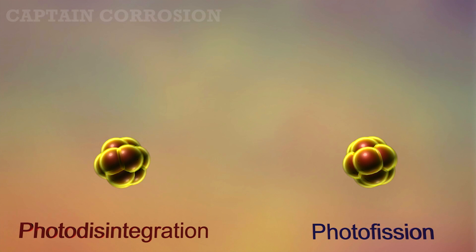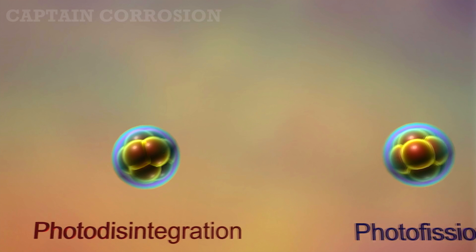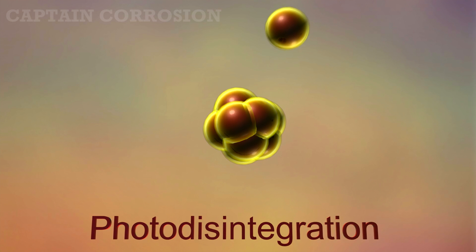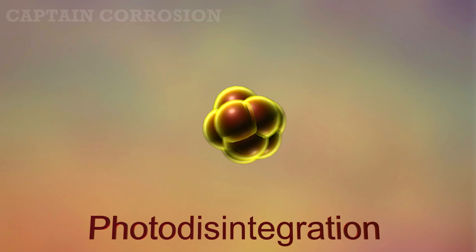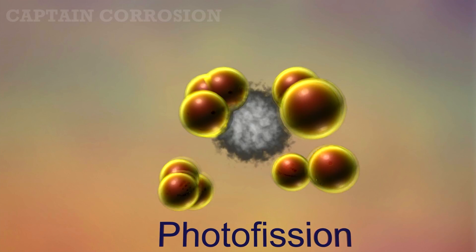If the energy of the photon is even higher, however, let's say tens or even hundreds of MeV, then the very nucleus of the atom can be ripped apart in two processes, known as photodisintegration and photofission. In both cases, the gamma photon is absorbed by the nucleus, causing the latter one to go into an excited state. During photodisintegration, a single proton, neutron or alpha particle is ejected from the nucleus. In the case of photofission, however, the nucleus is split into multiple fragments.